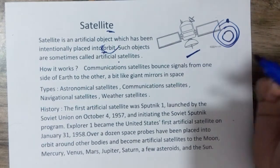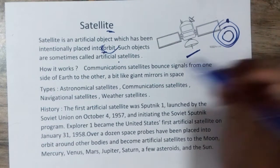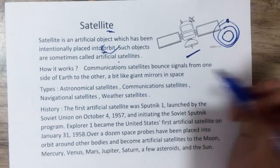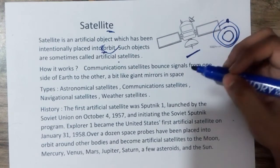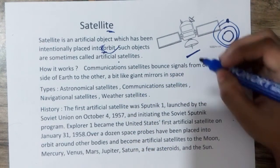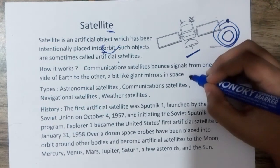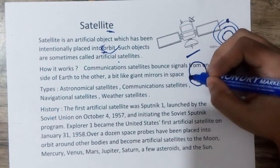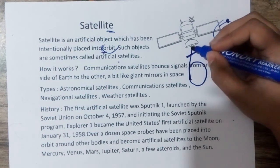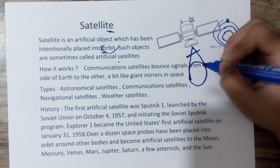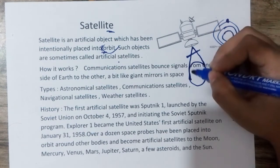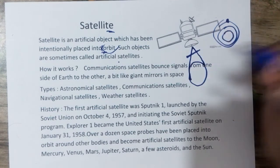Here in the picture we can see a satellite. How does it work? Satellites work in many ways. Communication satellites bounce signals from one side of the Earth to another, a bit like a giant mirror in space. So if we think of the Earth, there is a signal which goes through the satellite and out to the other side of the Earth. That is actually what satellites do in communication.